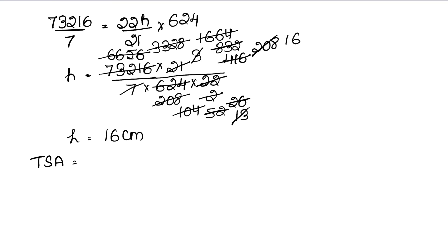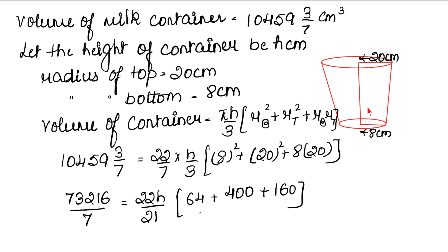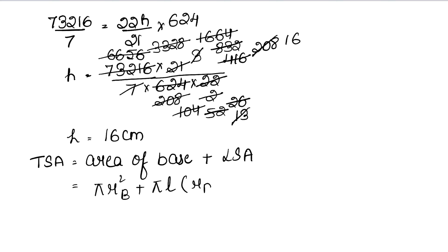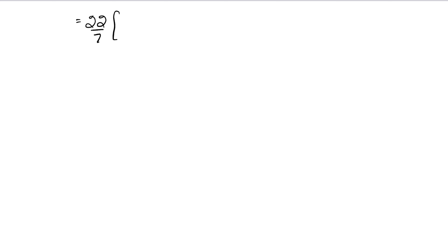अब हमें total surface area निकालना है। Total surface area of milk container में जहाँ-जहाँ metal sheet use होगी — circular base (π r_base²) plus lateral surface area (π L × (r_base + r_top))। Pi common लेने पर: TSA = π × [r_base² + L × (r_base + r_top)]। Pi = 22/7, radius of base = 8, तो 8²। अब L कितना होगा?